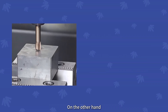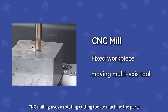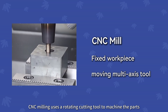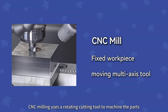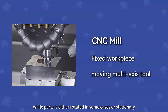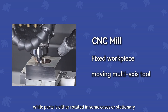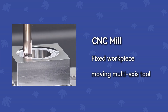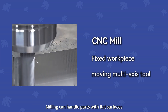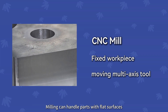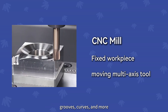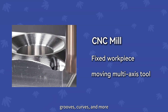On the other hand, CNC milling uses a rotating cutting tool to machine the parts, while the part is either rotating in some cases or stationary. Milling can handle parts with flat surfaces, grooves, curves, and more.